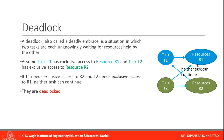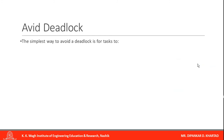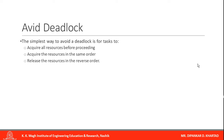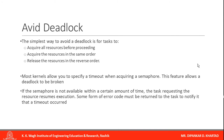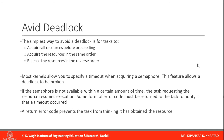How to avoid deadlock? There are various simple ways. First, acquire all the resources before proceeding. Second, acquire the resources in the same order and release them in the reverse order. Most kernels allow you to specify a timeout when acquiring a semaphore, and this feature allows a deadlock to be broken. If the semaphore is not available within a certain amount of time, the task requesting the resource resumes execution, and some form of error code is returned to notify it that a timeout occurred.